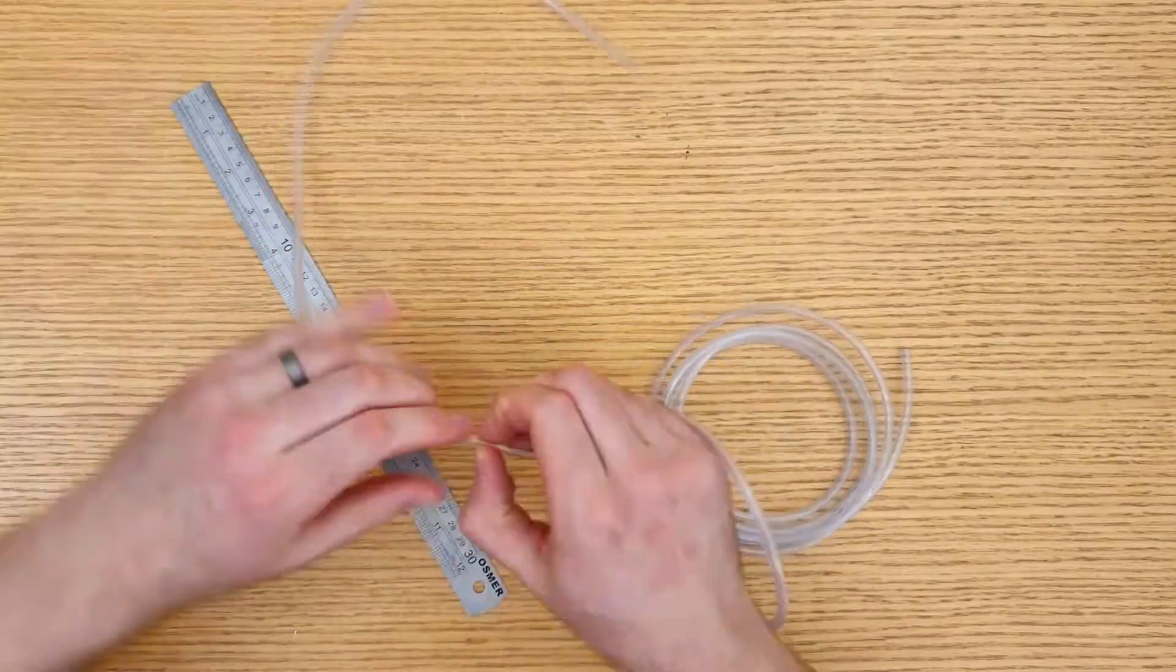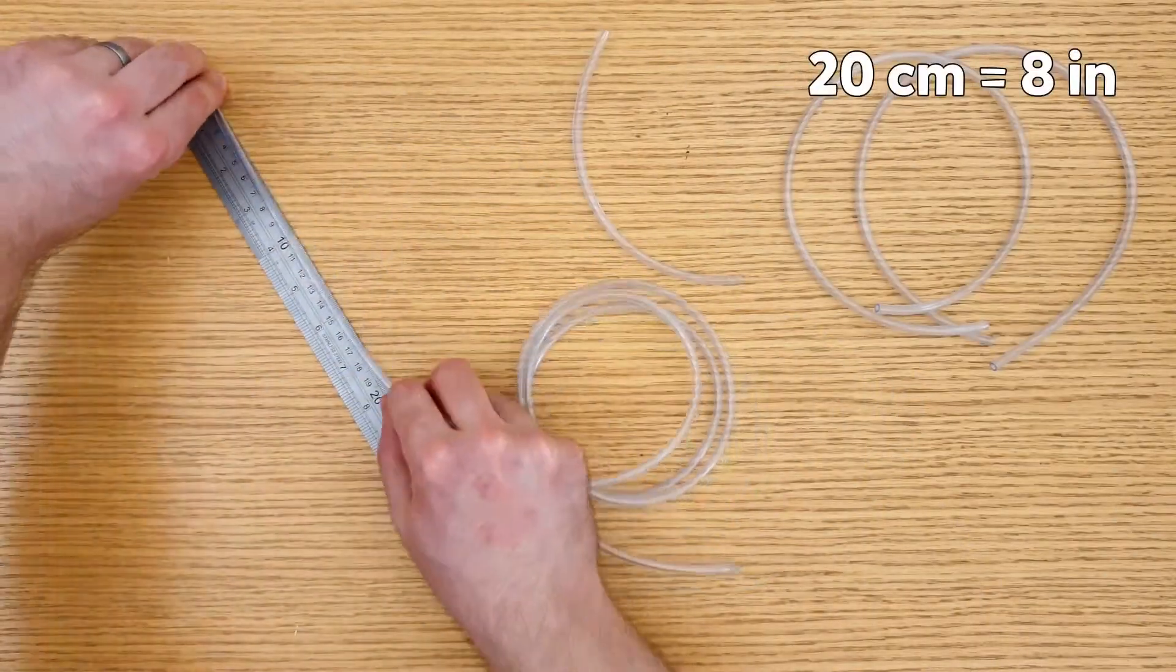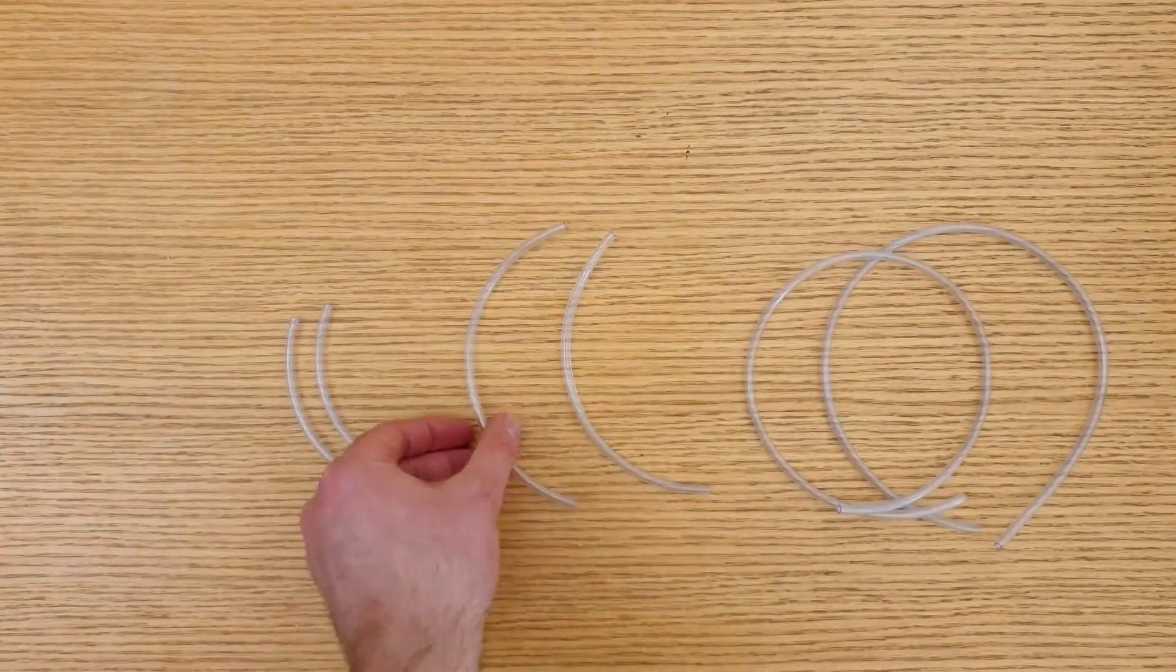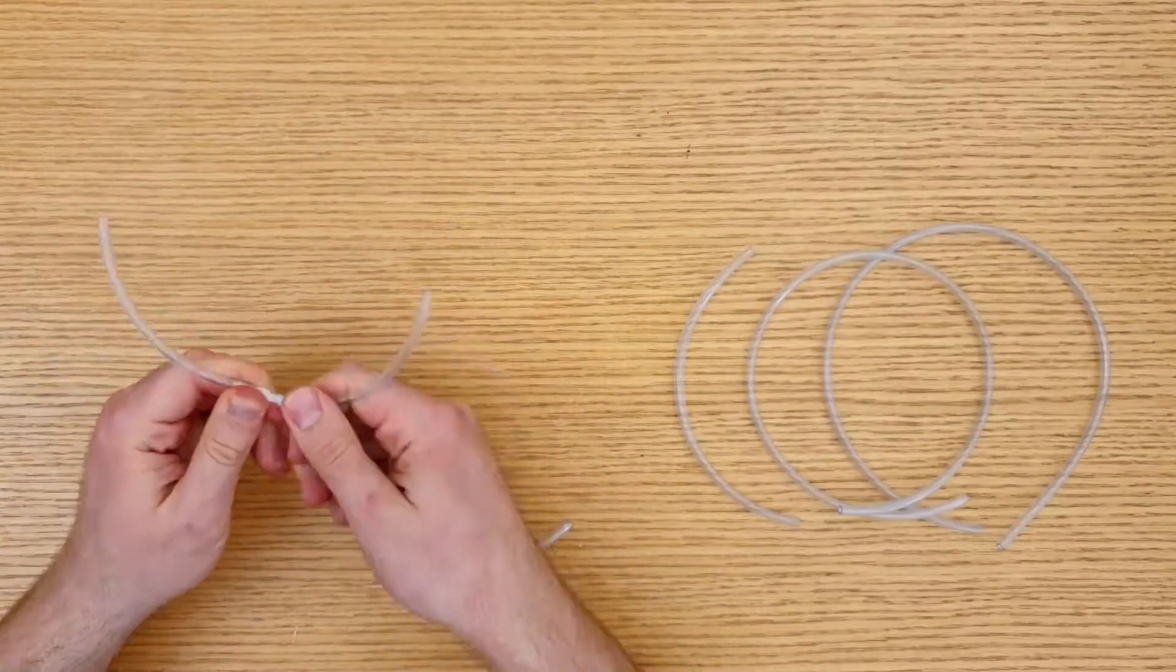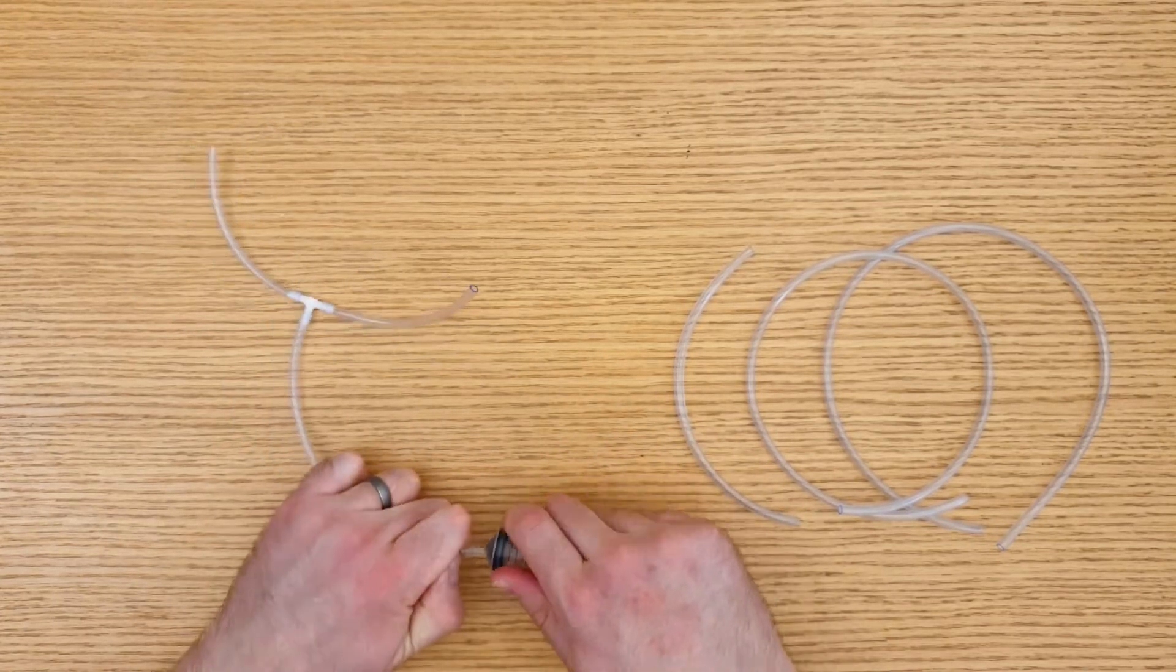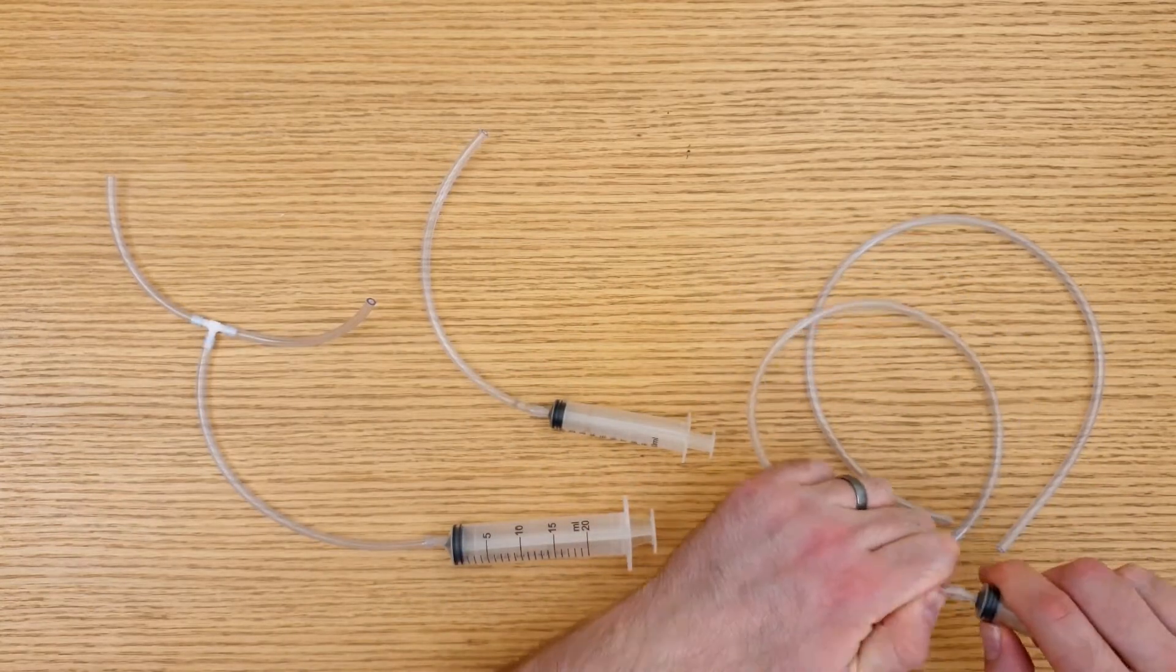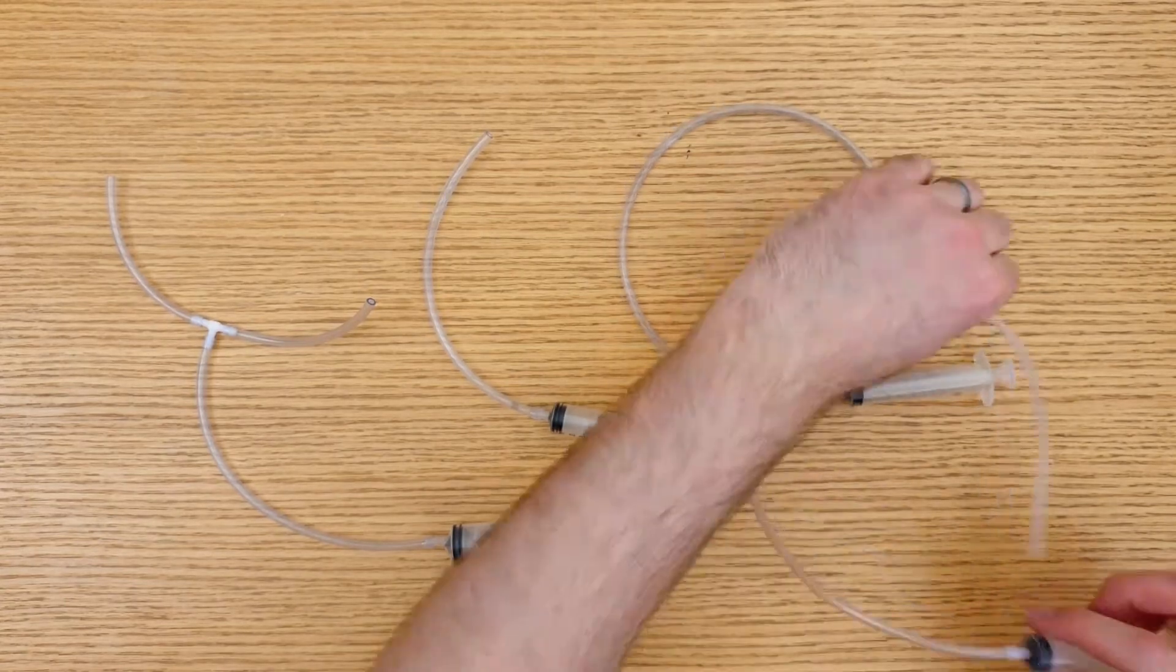Cut 2 pieces of plastic tubing 50cm long, 2 pieces 20cm long, and 2 pieces 10cm long. Attach one of the 20cm pieces of tubing to the two 10cm pieces using a T-piece connector. Then attach the other end to the 20ml syringe. Attach the two 50cm pieces of tubing and the remaining 20cm piece of tubing to 10ml plastic syringes.